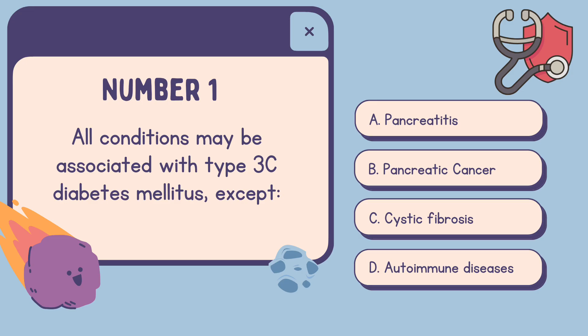Number one: All conditions may be associated with type 3C diabetes mellitus except — A. Pancreatitis, B. Pancreatic Cancer, C. Cystic Fibrosis, D. Autoimmune Diseases. The correct answer is D, Autoimmune Diseases. Take note of the word 'except.'